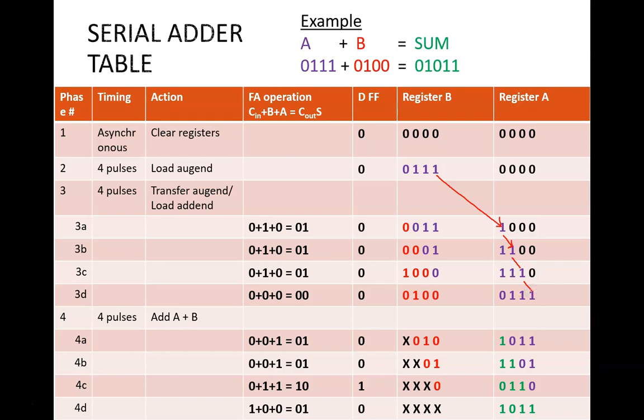While that is happening, these red numbers show how the addend, or B value, is shifted into register B, again one bit each clock cycle. During this period, the original black zeros are slowly lost from the circuit. They are being overwritten by our new desired values.